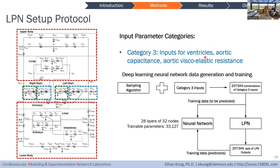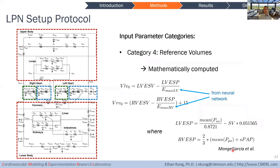The third category is ventricular parameters and large vessel parameters, which are more complicated. We trained a deep learning neural network to generate these. We constructed a large set of LPN parameters using sampling algorithms with different combinations of category three inputs, ran the LPN simulations to get results, and used all this data to train an inverse deep learning model to generate category three parameters. The fourth category, ventricular reference volumes, is calculated using equations where variables come from the neural network and from the target hemodynamic parameters.